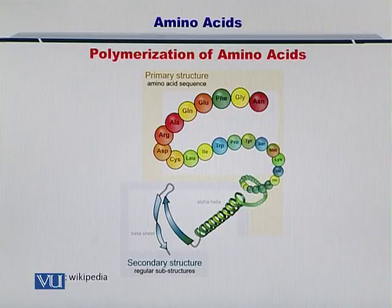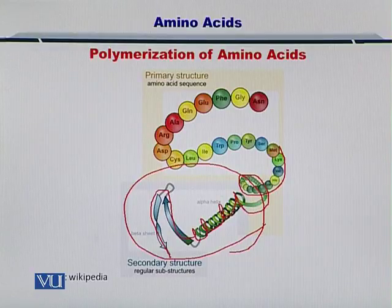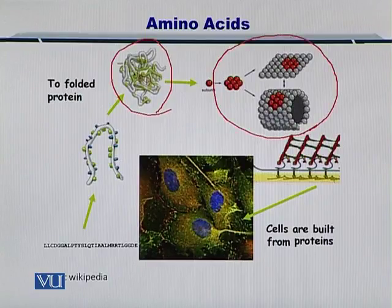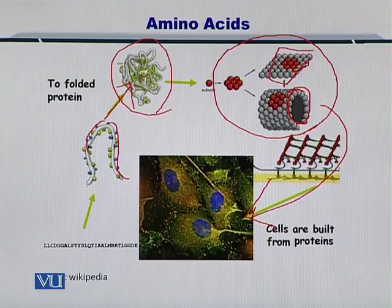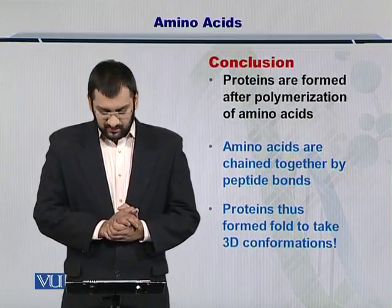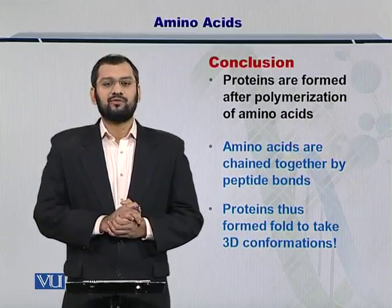After the polymerization of amino acids, the amino acids fold into structures and therefore become folded proteins. The folding of these amino acid chains is very important to impart function onto the proteins. Once you have the proteins folded together and taking forms of different sheets and barrels, they are active within the cell. In conclusion, proteins are polymerized from amino acids chained together by peptide bonds, and the proteins take 3D structures and forms that are important towards functionalizing these proteins.